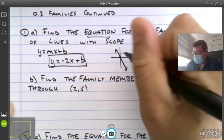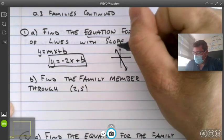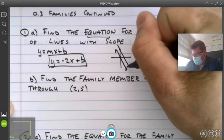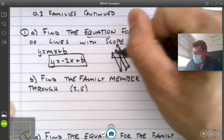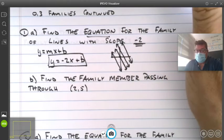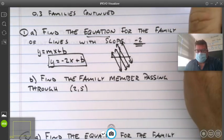What about the family member that has a y-intercept up here? Y equals five. There's another family member. So this family portrait looks like a series of parallel lines, all having slope of negative two. I hope that makes sense for you.